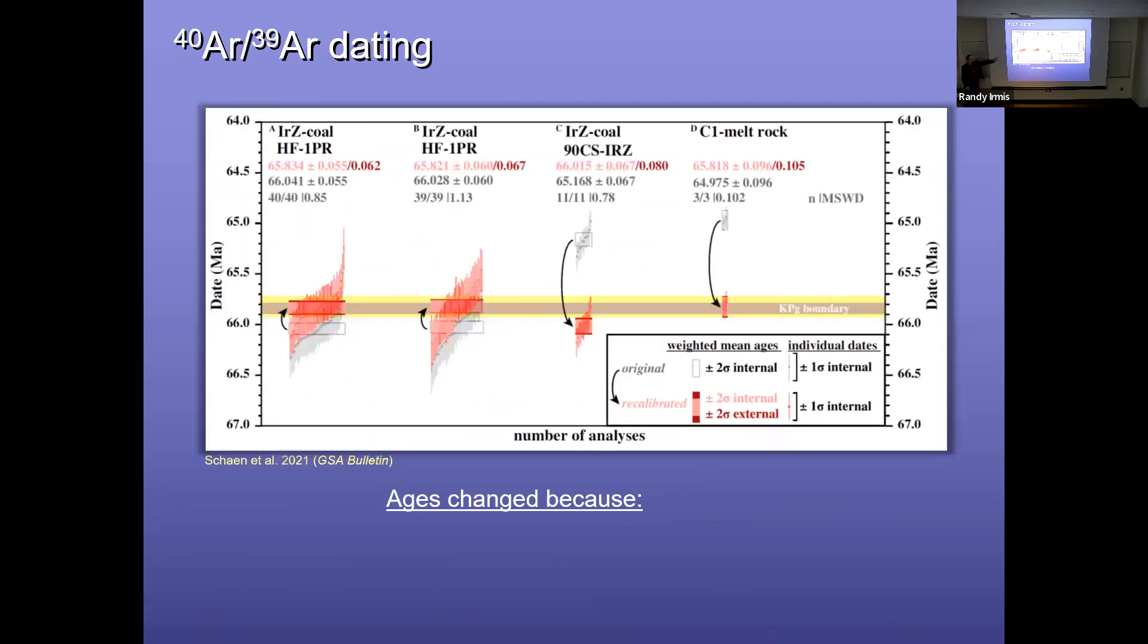And so how does this affect things? Well, here are some argon-argon ages from the Cretaceous Paleogene Boundary in Montana. And in red are the revised ages and gray are the old ages. And you can see that some of these ages have changed significantly, particularly the one in the middle, the IRZ-Cole labeled C, where the old age was after the Cretaceous Paleogene Boundary, and the revised age is before it. So that makes a huge difference, right? That's a mass extinction event. And the reason why these ages have changed is nothing to do with the samples themselves, but rather correcting for bias in the decay constant, as well as a revised age for the natural standard that was used to calibrate the date. So these are all things you need to pay attention to when you see ages in the literature. You cannot simply take them at face value, because they may or may not have been corrected for these things in the last few years.